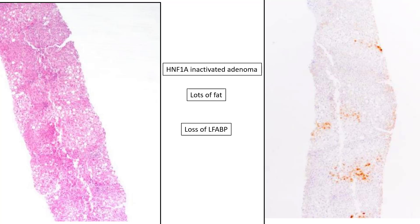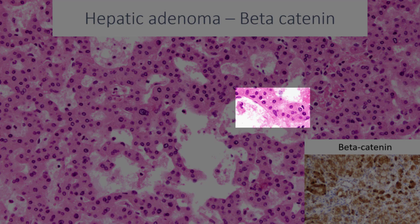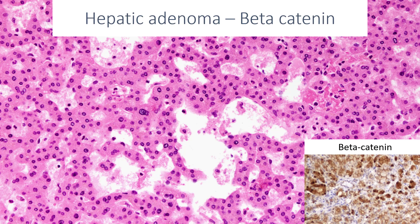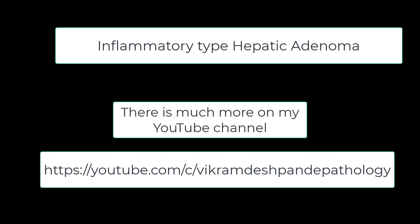Let's contrast the inflammatory type hepatic adenomas with the other two subtypes: the fatty adenoma, characterized by a lot of fat and loss of reactivity with LFABP; and the beta-catenin-activated adenoma, which shows significantly more cellular atypia, with prominent trabeculae, high nuclear-to-cytoplasmic ratios, and nuclear reactivity for beta-catenin. And that, ladies and gentlemen, is a review of inflammatory type hepatic adenomas.